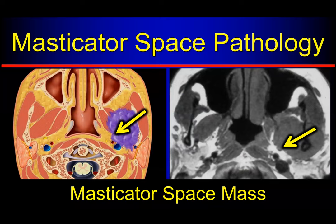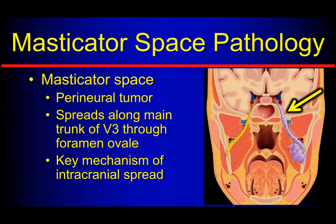Here on that same axial T1, I've outlined the masticator space and we see where it is in relationship to that parapharyngeal fat. A generic lesion of the masticator space is going to push that parapharyngeal fat medially and posteriorly, helping me guess the lesion is arising from that area. It's very important to remember that cranial nerve V3 going through that masticator space is a very important potential route of perineural tumor — a key mechanism of spread from the mandible to get up intracranially.